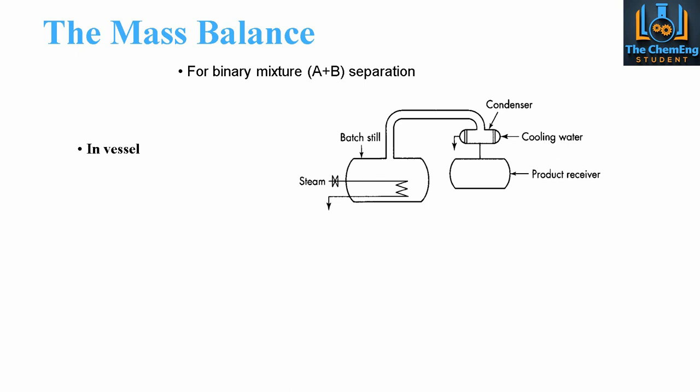Essentially what we're going to look at here is the mass balance over a binary mixture system whereby we're going to apply a special equation and use a graphical means in order to solve for the outlet conditions. This is slightly different from the standard mass balance because here we're referring to this as a differential mass balance, applied to a binary mixture of A plus B for separation.